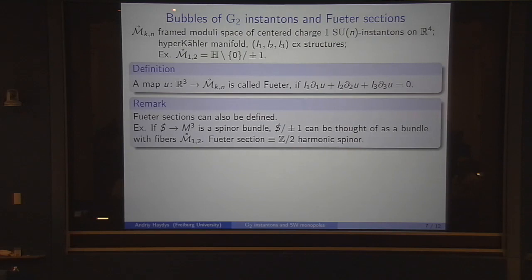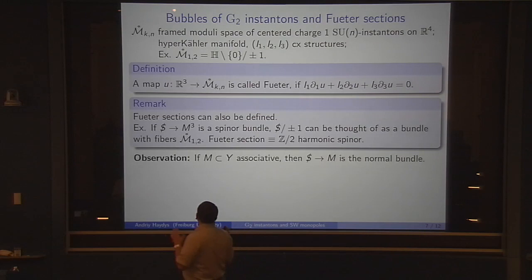A map from R^3 into this space is called Fueter if it satisfies this equation, which is of Cauchy-Riemann type, except that you have three variables and three complex structures instead of just two variables. You can also define Fueter sections. The simplest example is as follows: you take the spinor bundle and divide this by plus minus 1. You have a fiber bundle whose fiber is C^2 divided by plus minus 1, which is precisely M_1,2. Then if we have a section, it's just a harmonic spinor, but we call this object a Z/2 harmonic spinor.